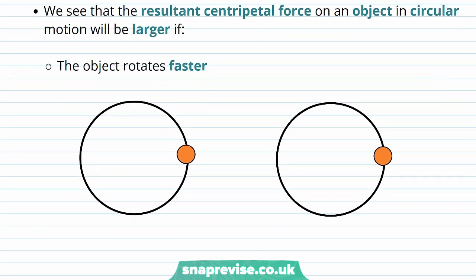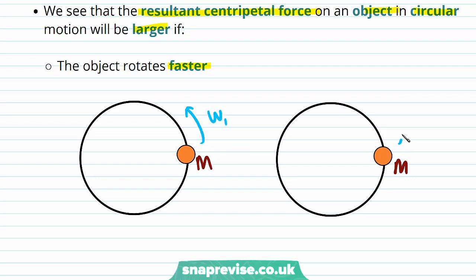We can clearly see from these equations that the resultant centripetal force on an object in circular motion will be larger if the object rotates faster. So if we have two objects in a circle with the same radius, the same mass, but one of them has a larger angular velocity.